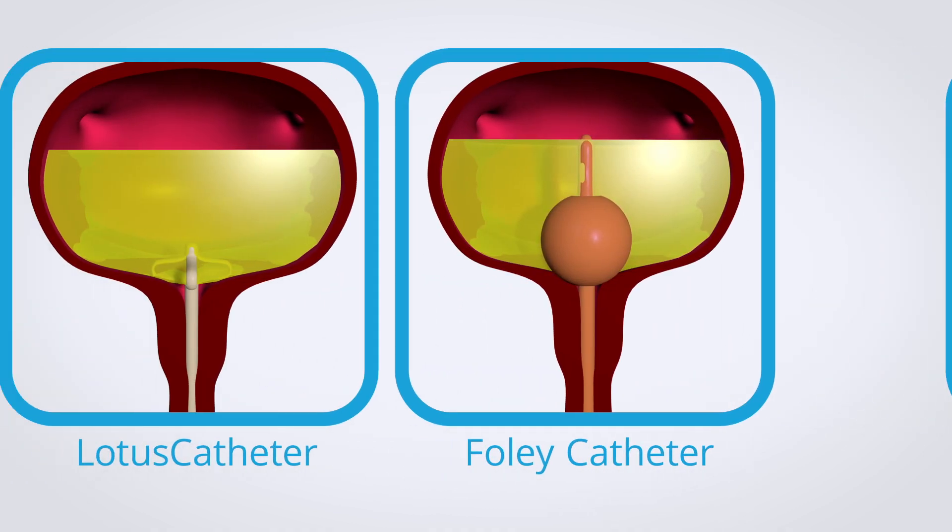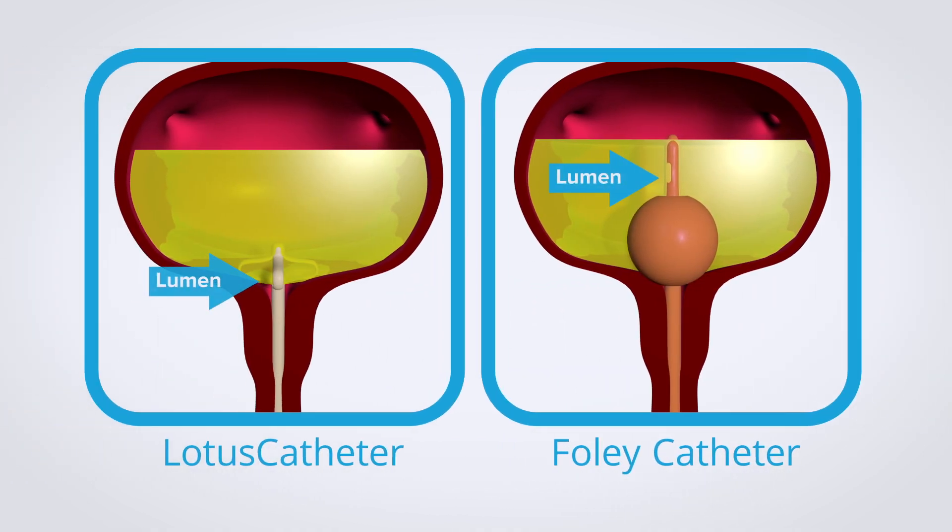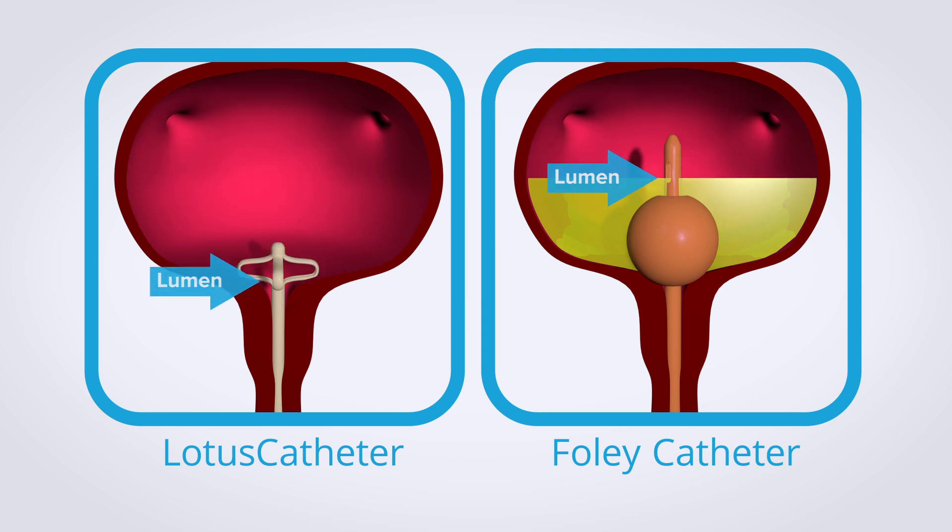The Foley catheter's lumen are located above the balloon so residual urine is always present. Residual urine is the leading cause of the Foley catheter's high rate of infection even with antiseptic coatings. Both residual urine and irritation contribute to urinary tract infections and bladder spasms.